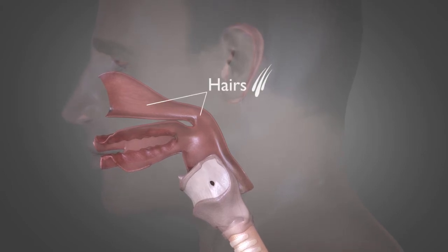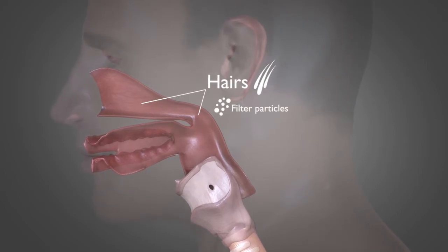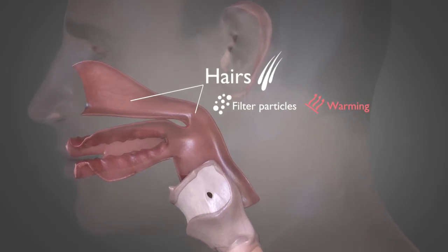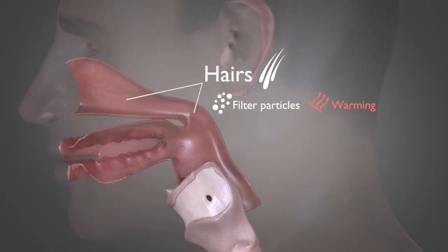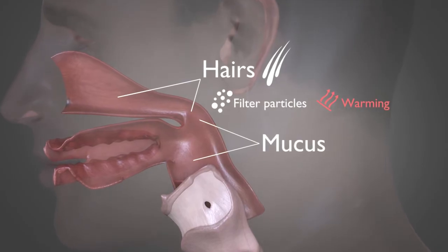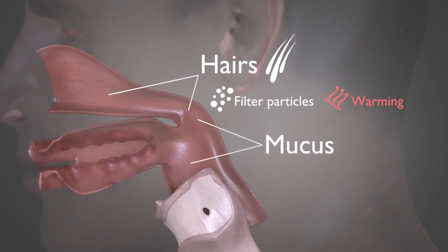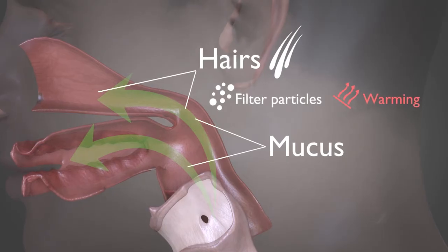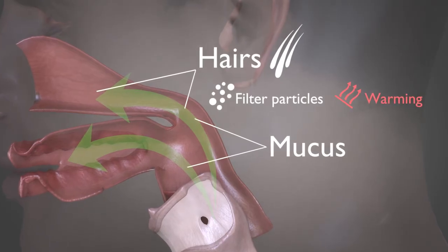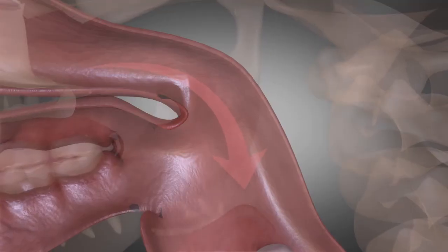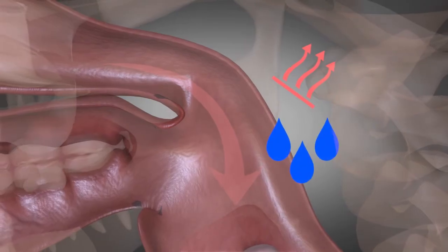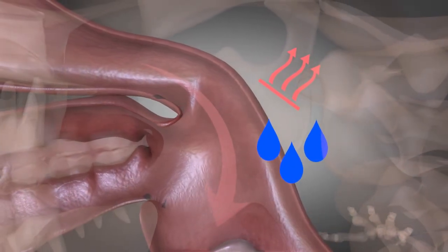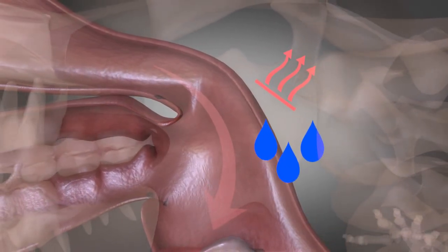The nose and nasopharynx have hairs to filter out particles in inhaled air and to aid with warming. The membranes of the nasopharynx and pharynx produce mucus, which traps even more particles from inhaled air. Cilia help this mucus move upwards and out of the airway via the nose and mouth. The membranes of the upper airway help warm and humidify air, such that the air is 100% saturated with water by the time it reaches the lower airways.